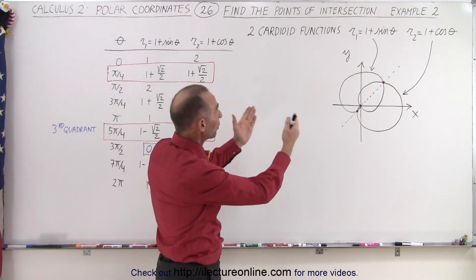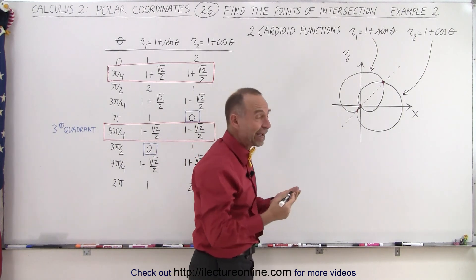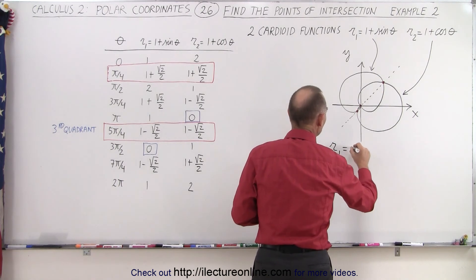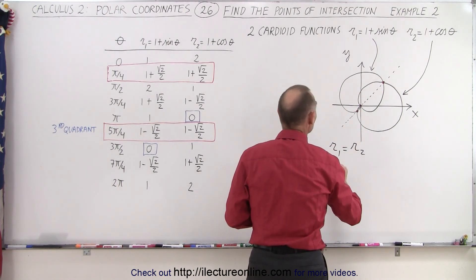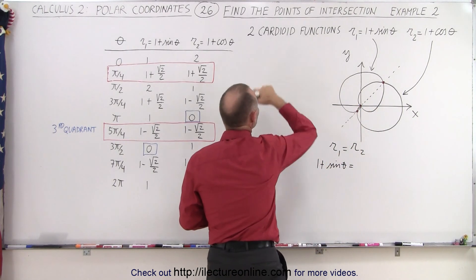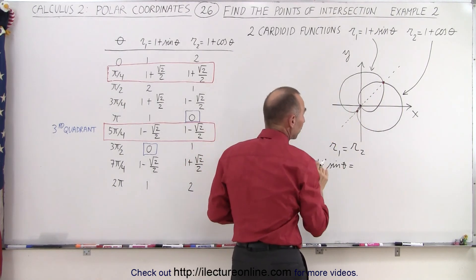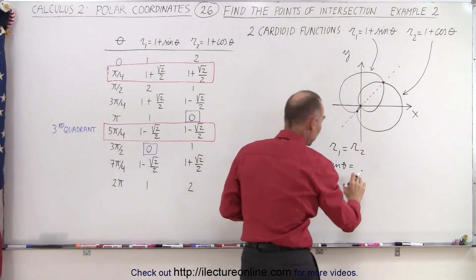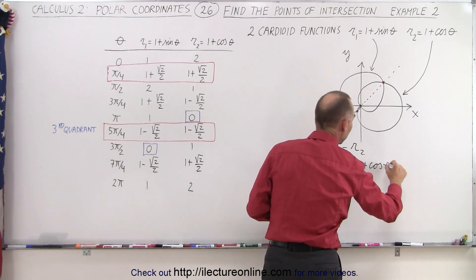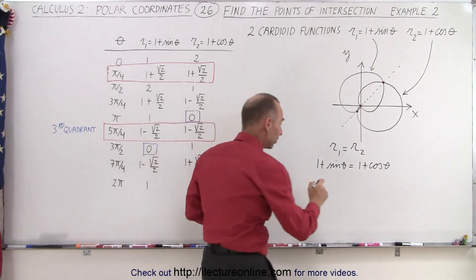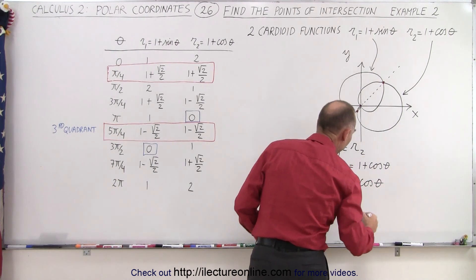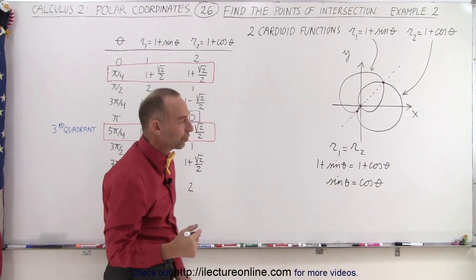So the first technique we would use is set the two equations equal to each other and find for which angle theta the two values are equal. So let's go ahead and do that. So we have R₁ is equal to R₂, R₁ being 1 plus the sine of theta. And notice both of these functions are what we call cardioids. So two cardioid functions drawn like this do indeed overlap three times. So we have 1 plus the sine of theta equals 1 plus the cosine of theta. So we can subtract 1 from both sides which gives us sine of theta is equal to the cosine of theta.